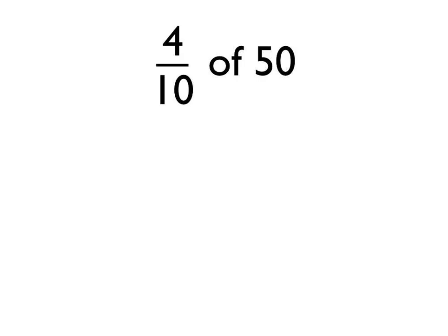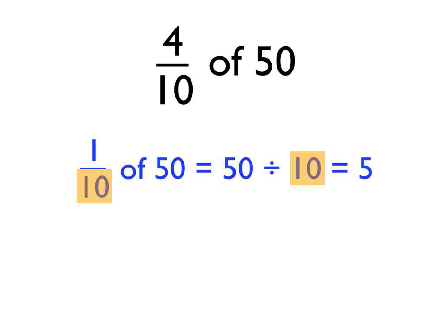I just want to have a look at how we do it with numbers now. Now that we've got the idea of what calculating a fraction of an amount is, I'm going to lose the diagrams and just try and do it with numbers. We're going to do four-tenths of 50. Well, if we're working in tenths, the first thing we do is take 50 and divide that by 10. If we divide it by 10, we get what one-tenth of 50 is. Fifty divided by 10 is 5, so one-tenth of 50 is 5.